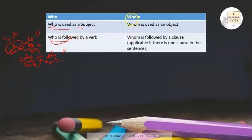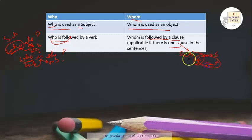Now let's talk about the usage of 'whom.' Whom is used as an object and is followed by a clause. This rule is applicable only if we have one clause in the sentence. A clause is a combination of a subject and a verb — for example, 'I eat': 'I' is the subject and 'eat' is the verb, so this is a clause.